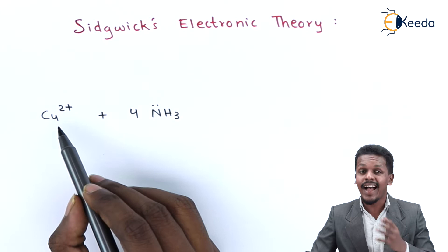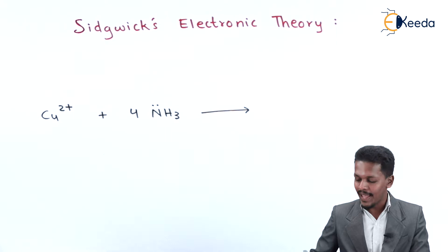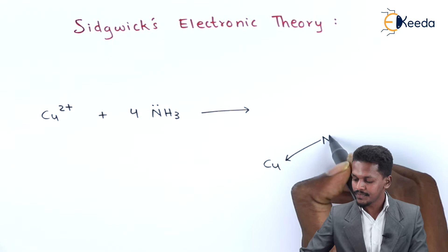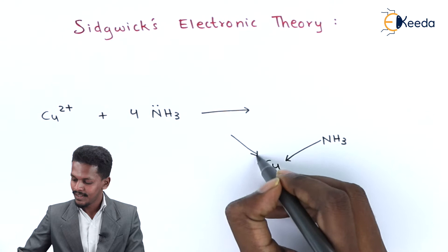Cu²⁺ ion will be surrounded by four moles of NH₃. This is the representation for Sidgwick's Electronic Theory.